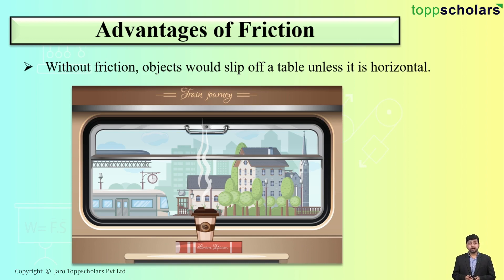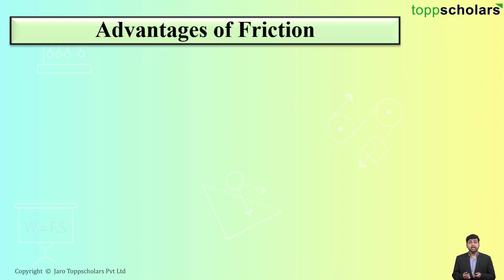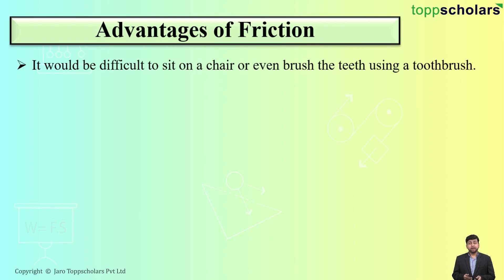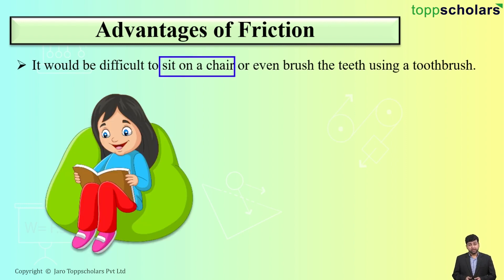But suppose if the cup is kept on an inclined or a vertical surface, it would slip off. So we need friction to keep objects at rest. Another advantage of friction is that it would be difficult to sit on a chair — if you want to sit on a chair, we require friction.